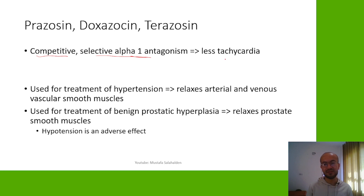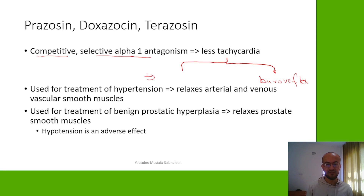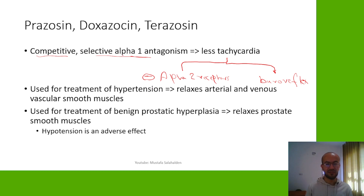In the previous video, I explained that tachycardia happens by two mechanisms with non-selective alpha blockers: the baroreceptor reflex tachycardia, and the antagonism of alpha-2 receptors, which increases norepinephrine going to the heart. Because these drugs are more selective to alpha-1, that second mechanism would be absent, so we'd only have the baroreceptor reflex tachycardia — giving us less tachycardia compared to non-selective alpha blockers.